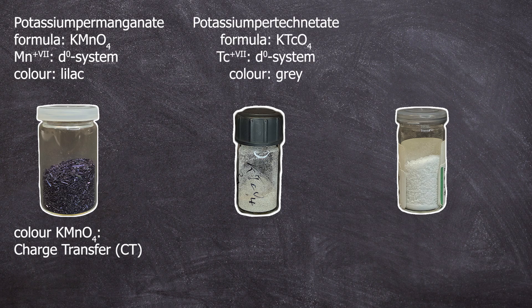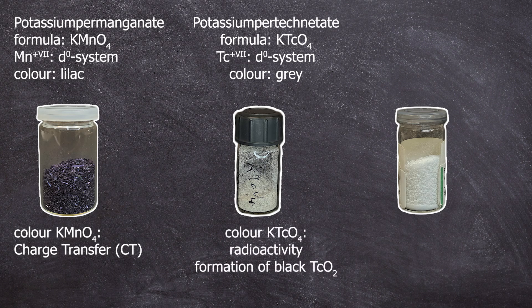Pertechnetate, on the other hand, is truly not snow white like the perrhenate, but rather dirty grayish. This color cannot be explained by a charge transfer complex, but rather by the fact that technetium is radioactive. Due to the radioactive decay, trace amounts of technetium oxygen compounds such as technetium dioxide form. The technetium dioxide is analogous to manganese dioxide, which is also known for a brown-black color.